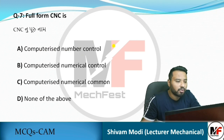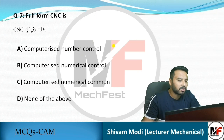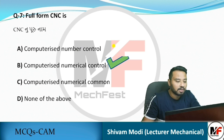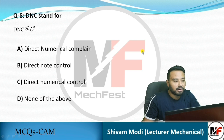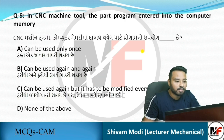Next MCQ: The full form of CNC is Computerized Numerical Control, so the answer is B. And DNC stands for Direct Numerical Control.